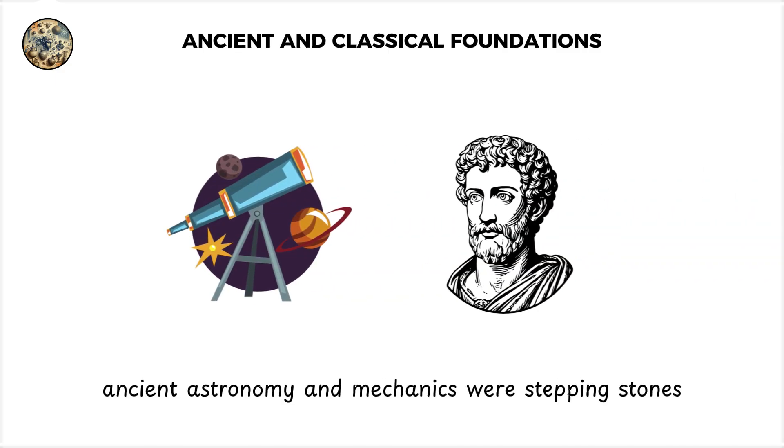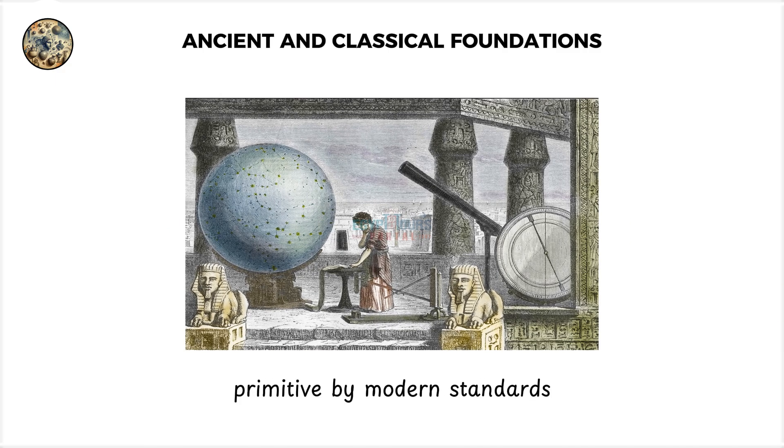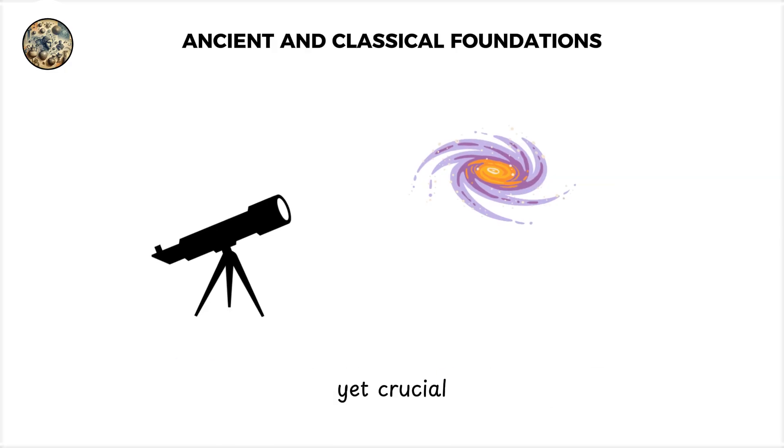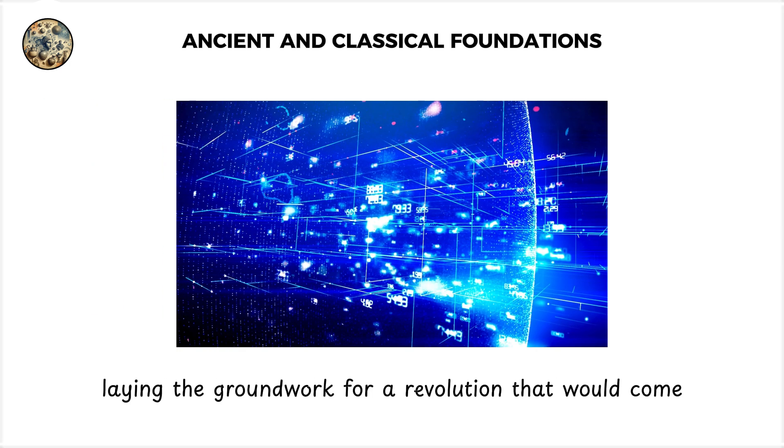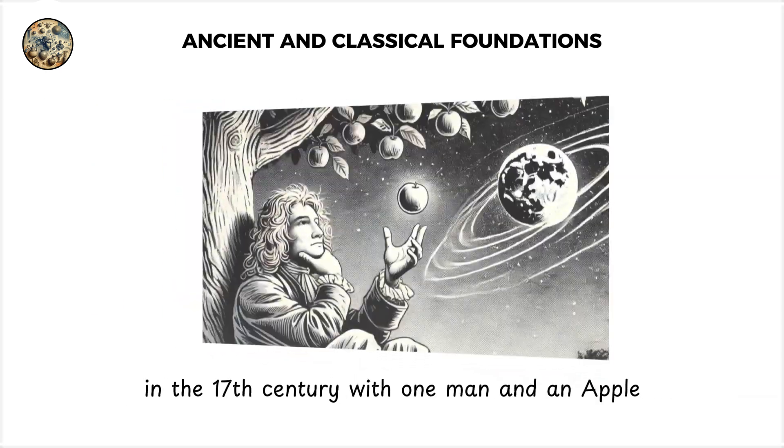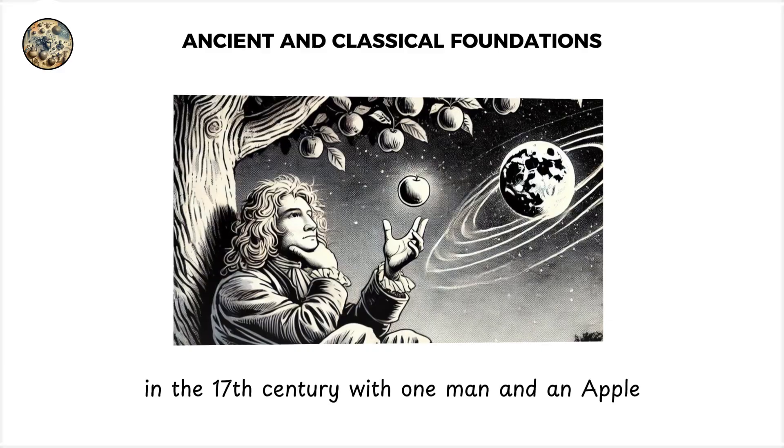Ancient astronomy and mechanics were stepping stones, primitive by modern standards, yet crucial for setting humanity on the path toward a scientific method. They represent the first attempts to describe the world systematically, laying the groundwork for a revolution that would come in the 17th century with one man and an apple.